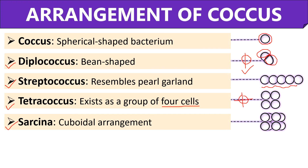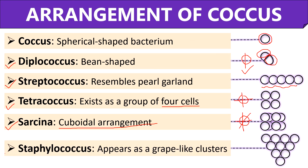Fourth is Sarcina, which generally possesses a cuboidal arrangement, and here the cell division occurs in three planes in a regular pattern. The last one is Staphylococcus, where the cells appear as grape-like clusters, and here the cell division occurs in three planes but in an irregular pattern.